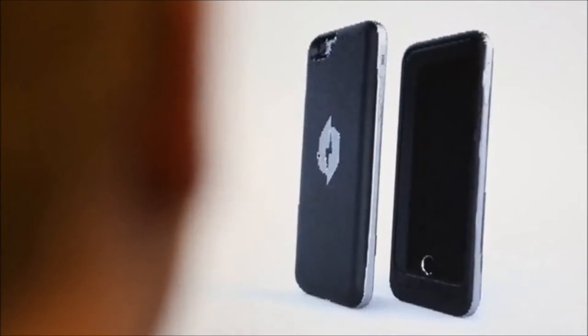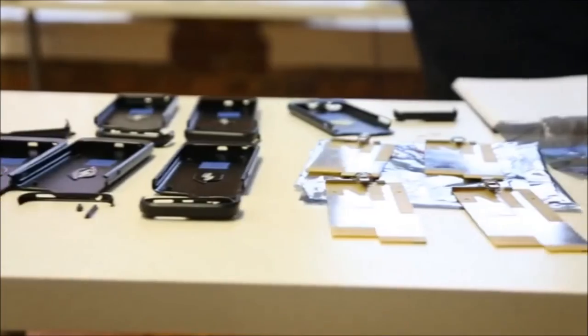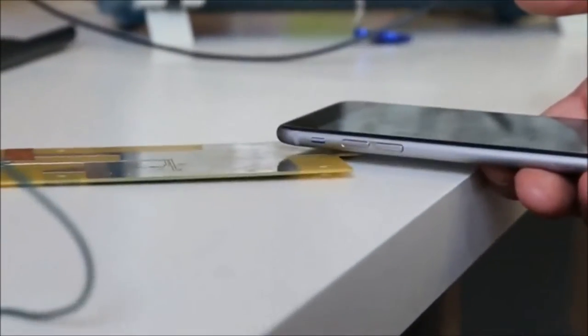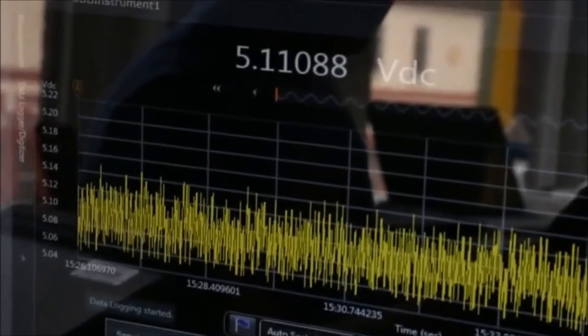The first solution we are launching on Kickstarter now is a case for the iPhone 6 and Galaxy S6 that allows you to download power from the air and extends the battery life of your phone. There is no need for an external battery pack or some bulky battery case.